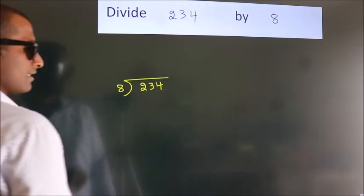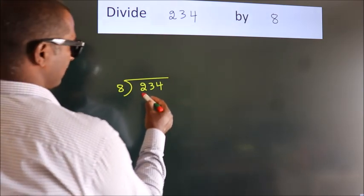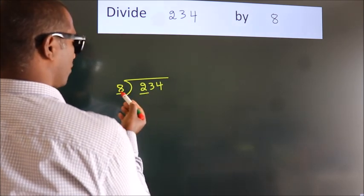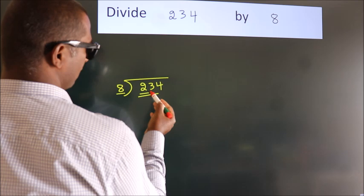This is your step 1. Next, here we have 2. Here 8. 2 is smaller than 8, so we should take 2 numbers: 23.